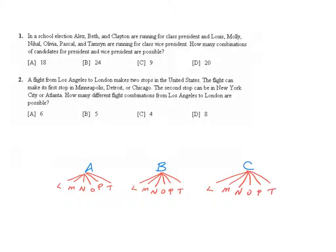If we then look at all of our possibilities, we have 1, 2, 3, 4, 5, 6, 7, 8, 9, 10, 11, 12, 13, 14, 15, 16, 17, 18 possible combinations, which was A.